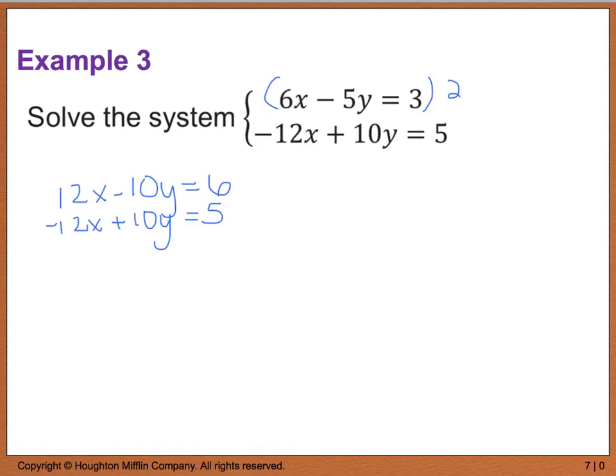Now when I go to add these, my x's are going to cancel, my y's are going to cancel, and I'm left with 0 equals 11. In this case, this is not true, and because this is not true, this tells me that this system has no solution. As we talk about here in a few minutes, we're going to say that this is an inconsistent system because it has no solution.